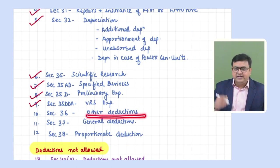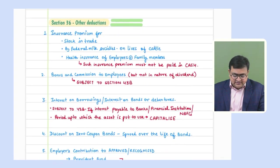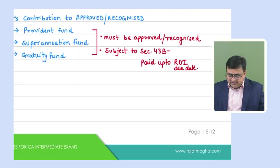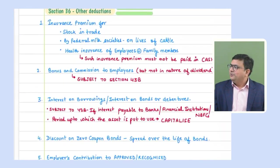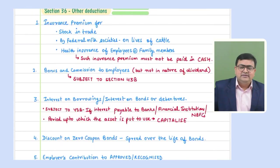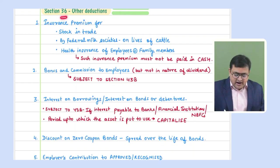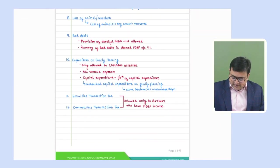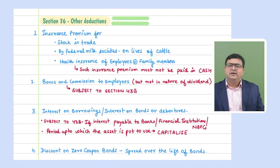Now let's come to Section 36, which deals with 'other deductions.' There is a list of specific expenses allowed under Section 36, covered on pages 5.12 and 5.13 of the book. It is a very easy and very important section.